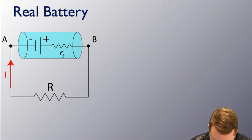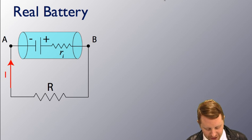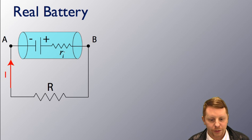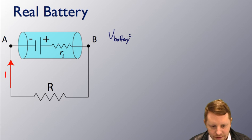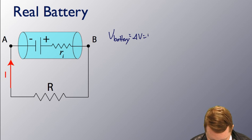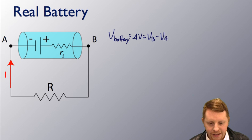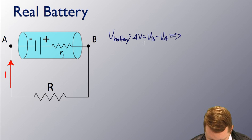More realistic, however, is our real battery here. We have some amount of internal resistance as part of the battery itself. The voltage of our battery, in this case, which is still delta V, or VB minus VA, in this case,